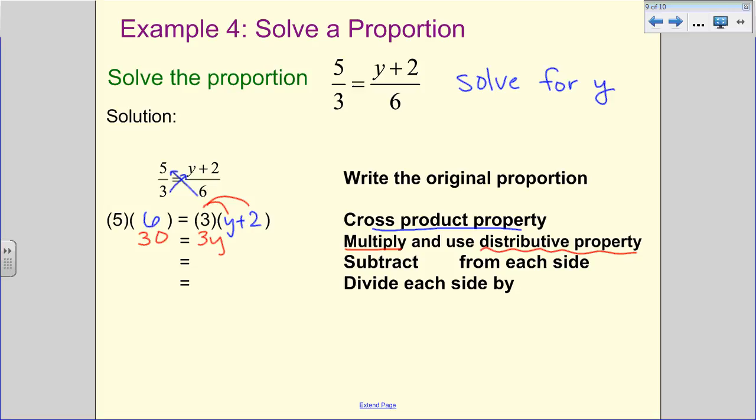which is going to give me this plus 6. I have to subtract 6 from each side to start isolating for Y. So I get 24 is equal to 3Y, and then I'm going to divide each side by 3. So I get 8 is equal to Y for that.